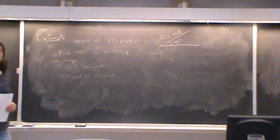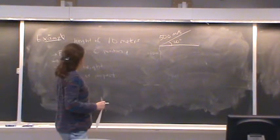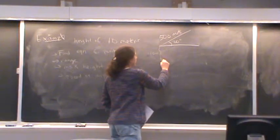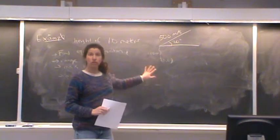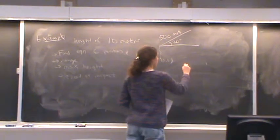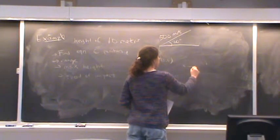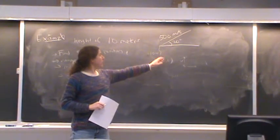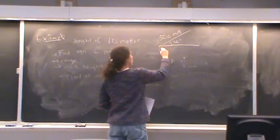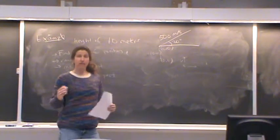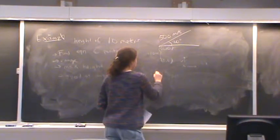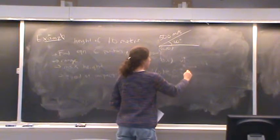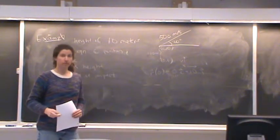Let's figure out what information we have to start out. We know its initial position. If this is the origin here, I'm working in two dimensions for this problem: the x direction and the y direction. If you put the origin right here, then its initial position is at the point (0, 10). Writing that as a vector equation, r(0) = 0i + 10j.